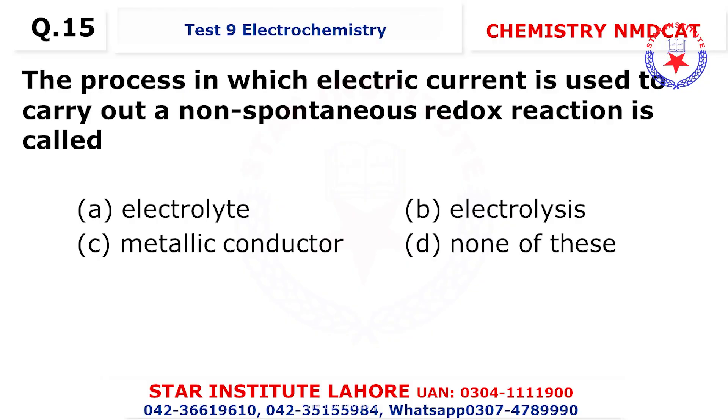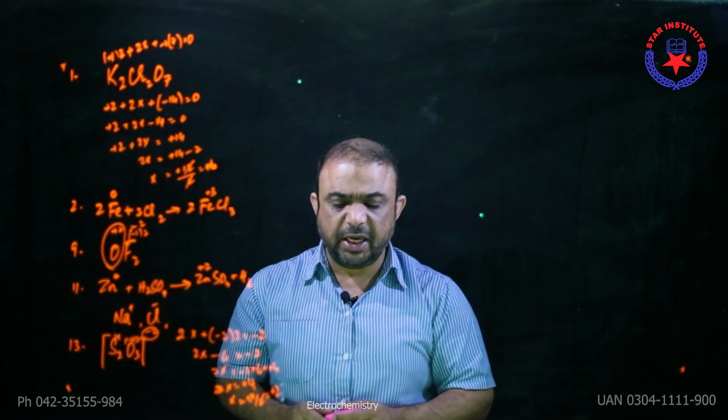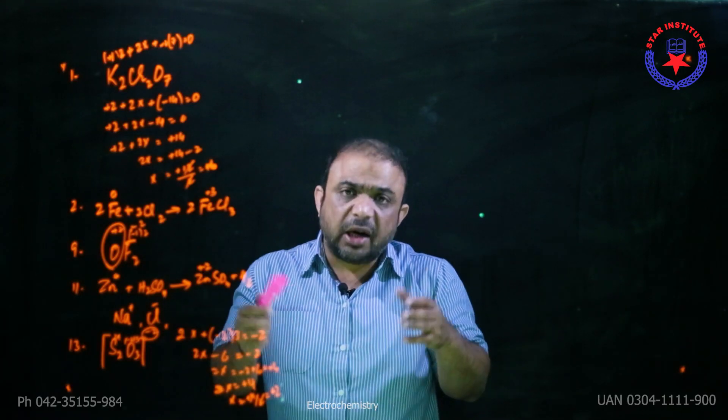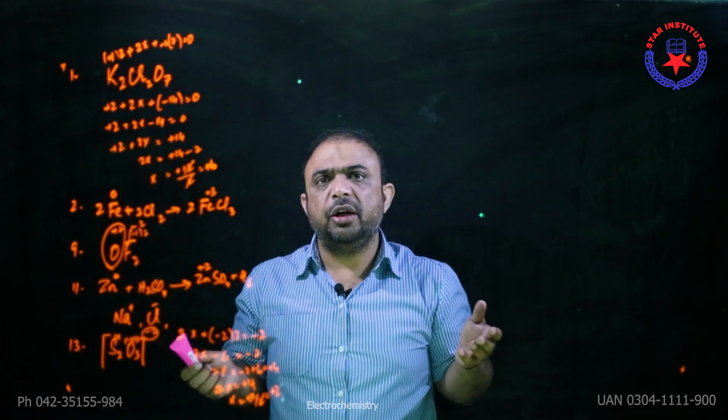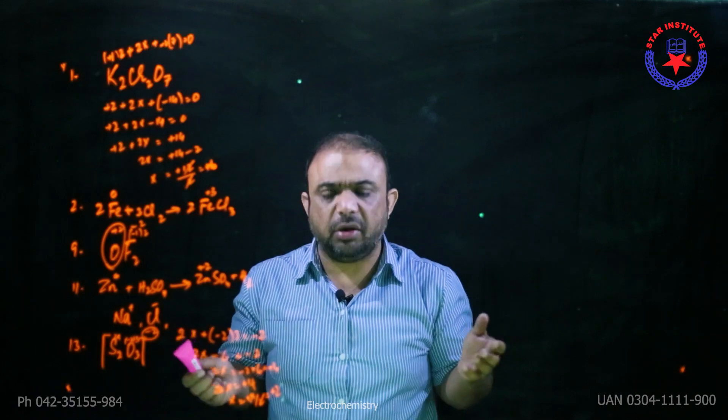Question number 15: the process in which electrical current is used to carry out a non-spontaneous redox reaction — if current is passing through, it is electrolysis.